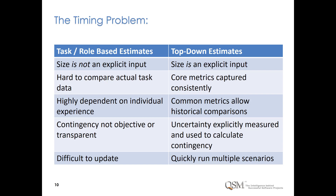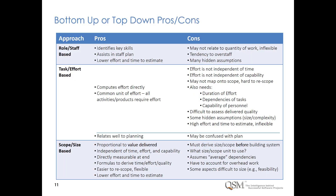Top-down estimates combine summary-level metrics from similar completed projects with observed relationships between project variables — time, capability, and cost. Top-down estimates require fewer inputs that are easier to capture consistently at project closeout. We can use historical data to tune estimates to our past performance and benchmark against history.